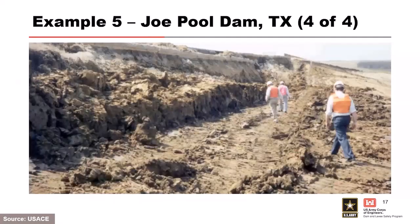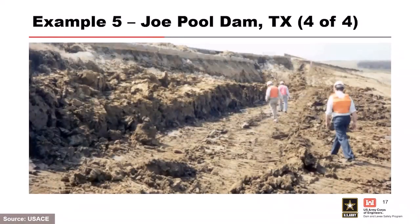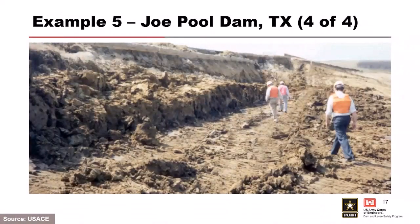Further investigations revealed a soft, wet layer of clay fill only three to four inches thick, about three feet above the original top of natural ground. They could not definitively determine why it occurred through construction records, but believed improper handling of unprocessed or frozen fill subjected to excessive rainfall—and not removed and replaced—was left in place and eventually caused the failure. They repaired it and Joe Pool Dam is still in operation.